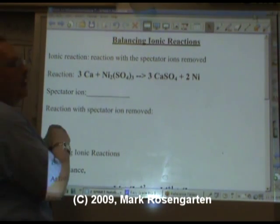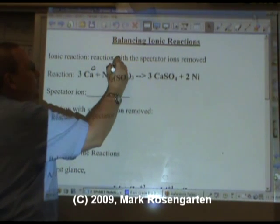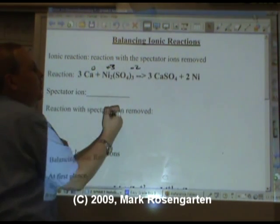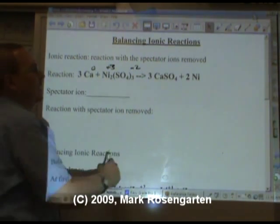Let's see if we can identify some spectator ions here. Calcium has no charge, nickel is plus three, sulfate is minus two. Two times three is plus six, three times minus two is minus six.